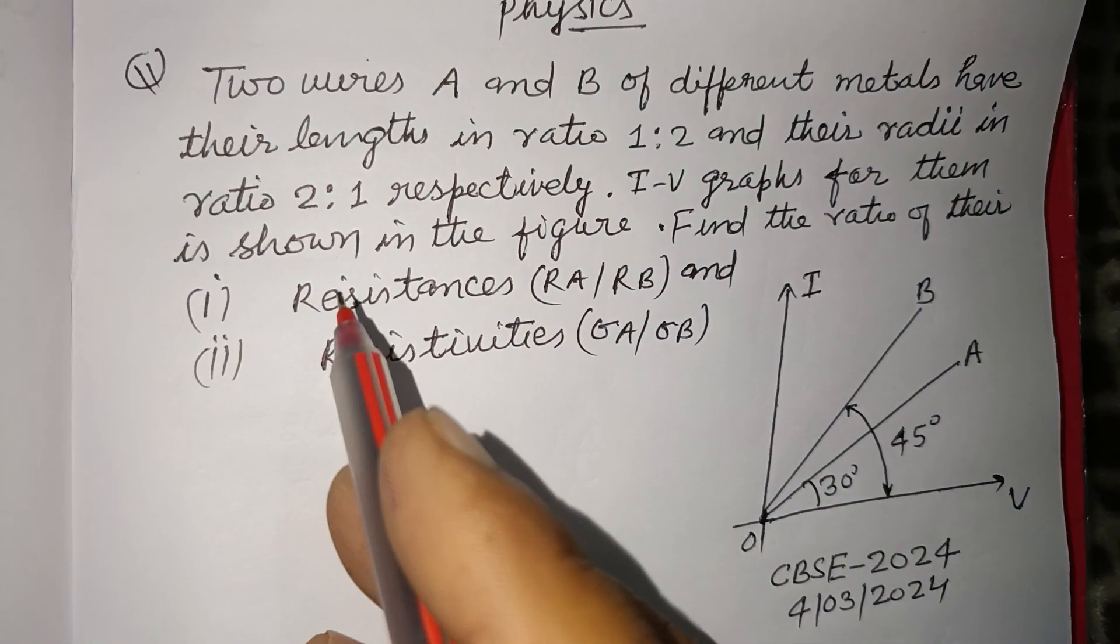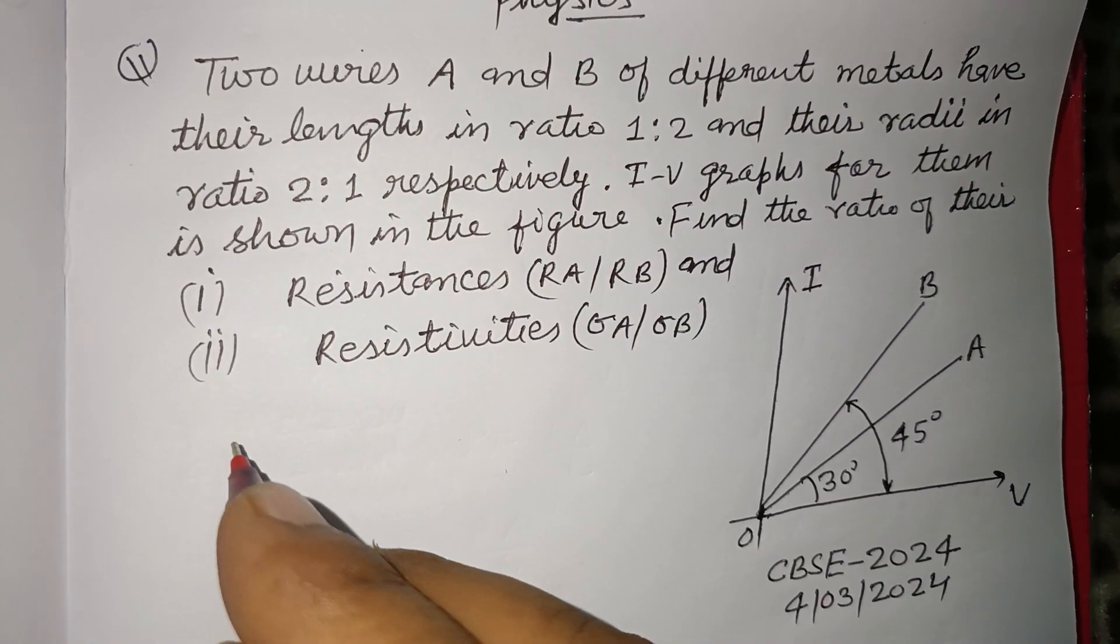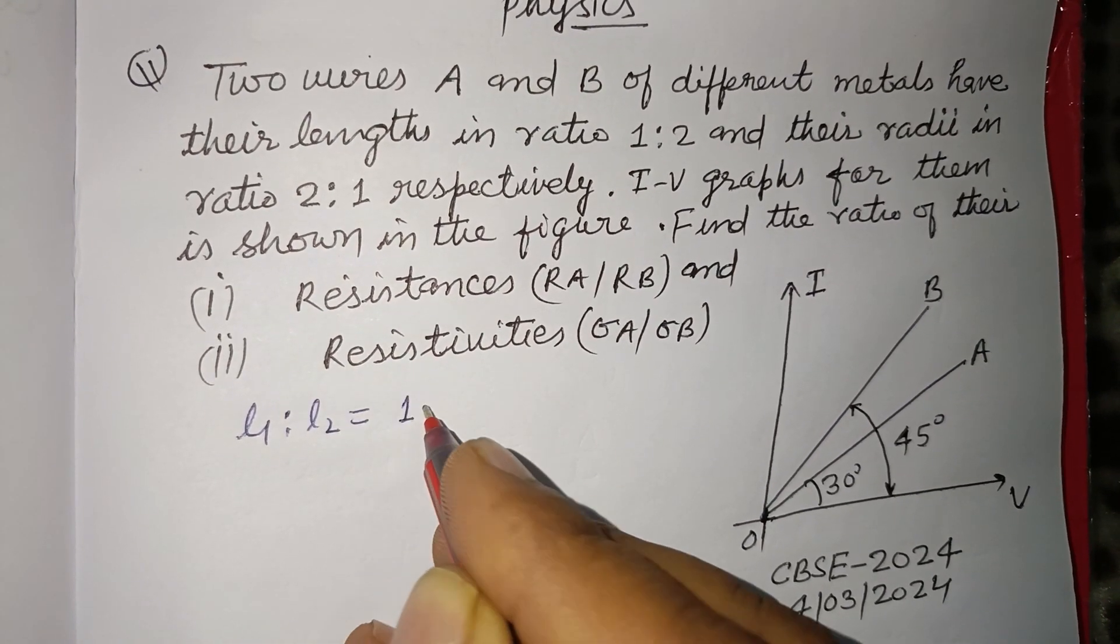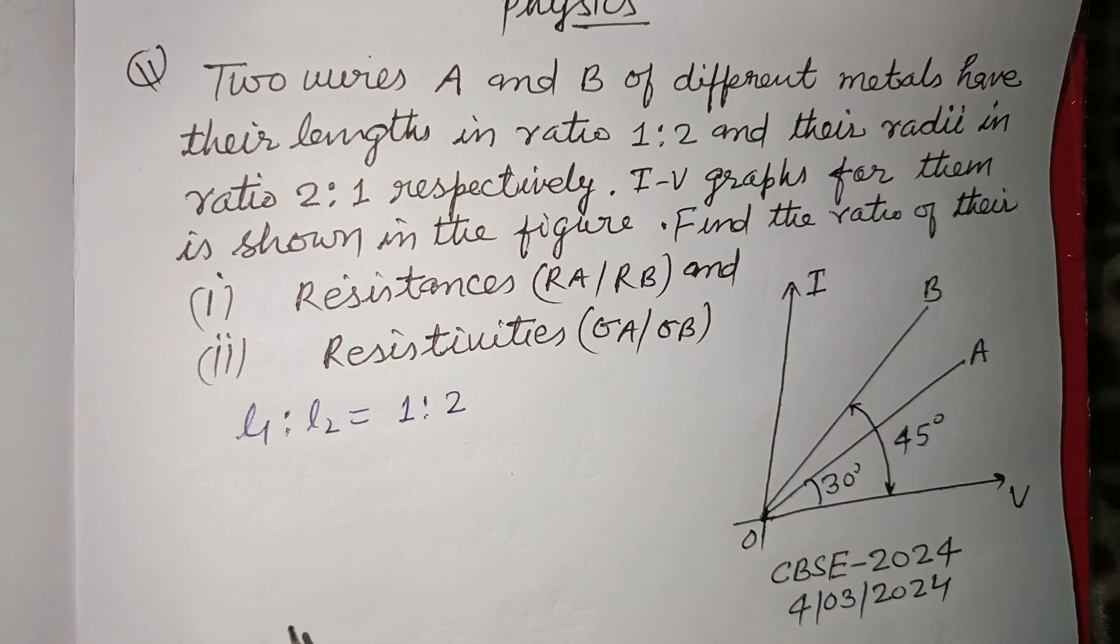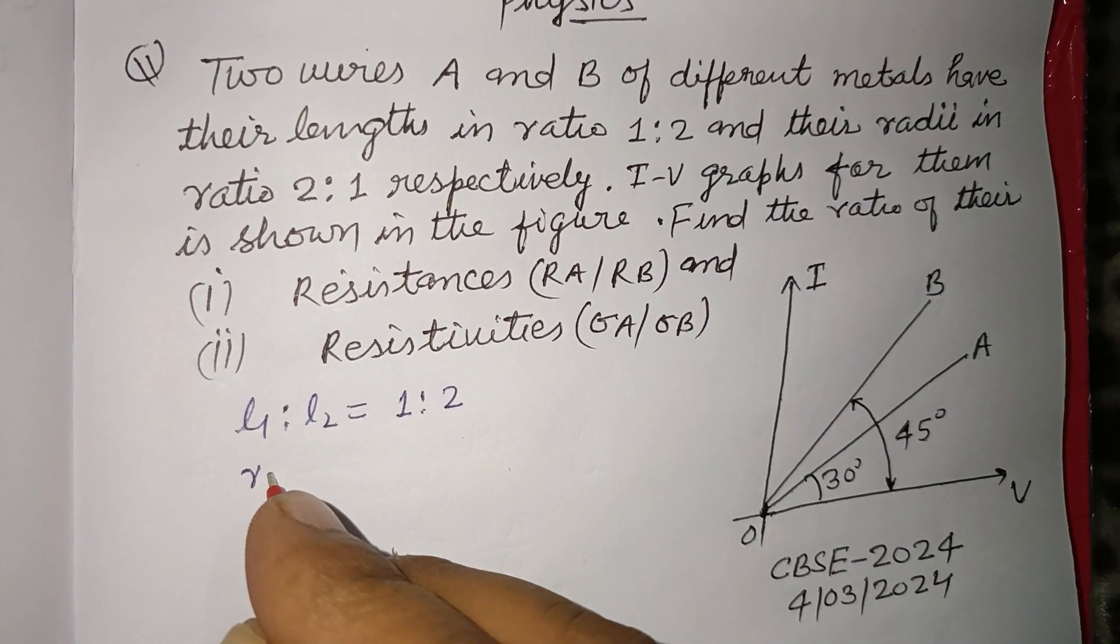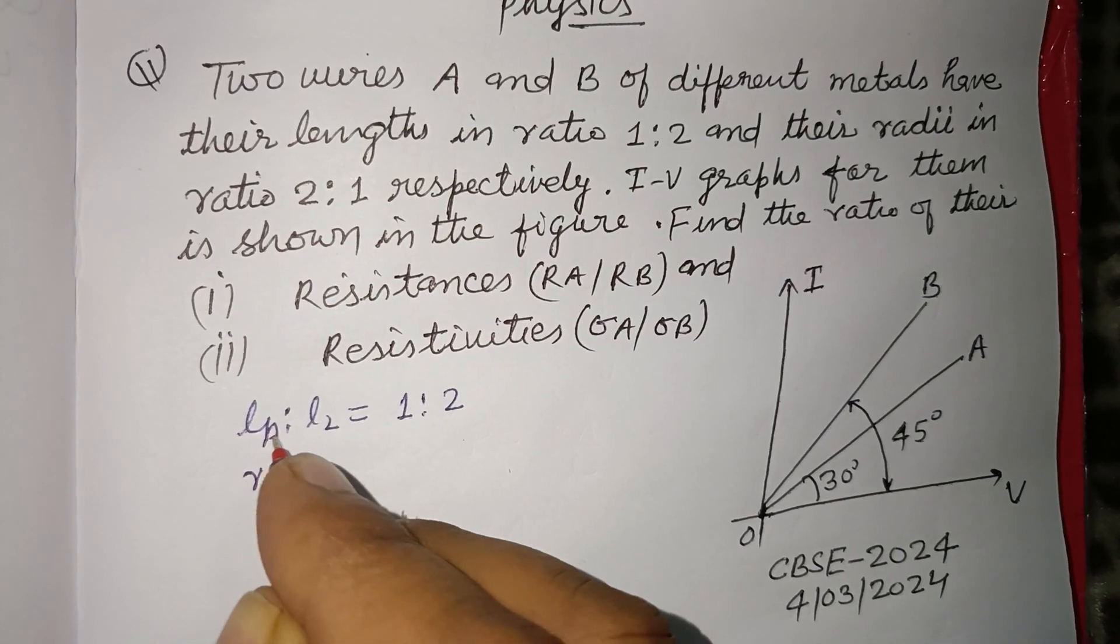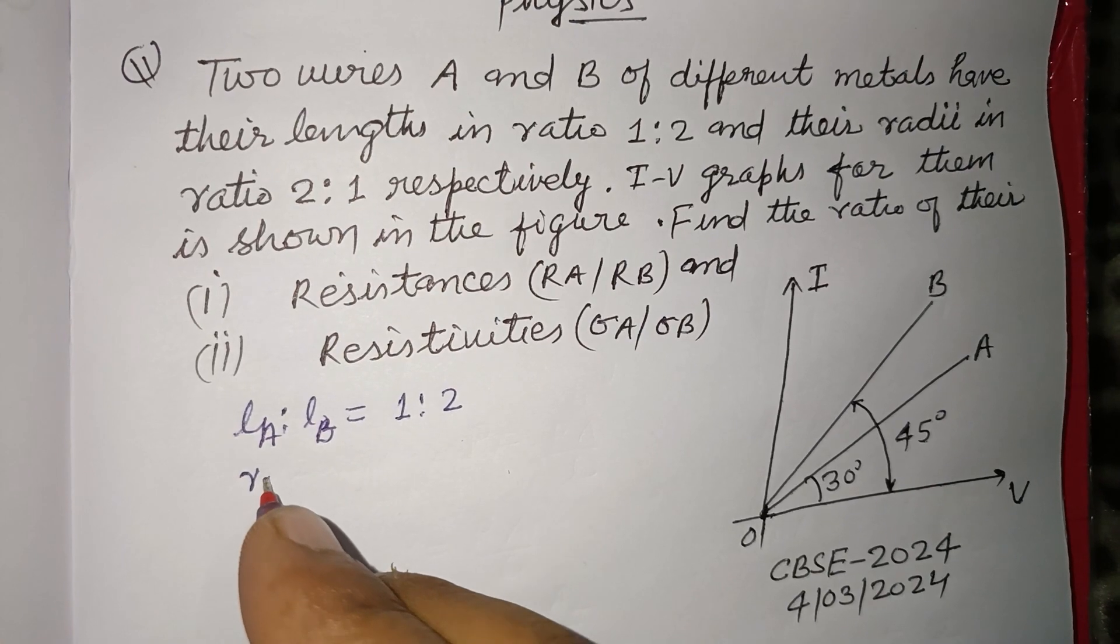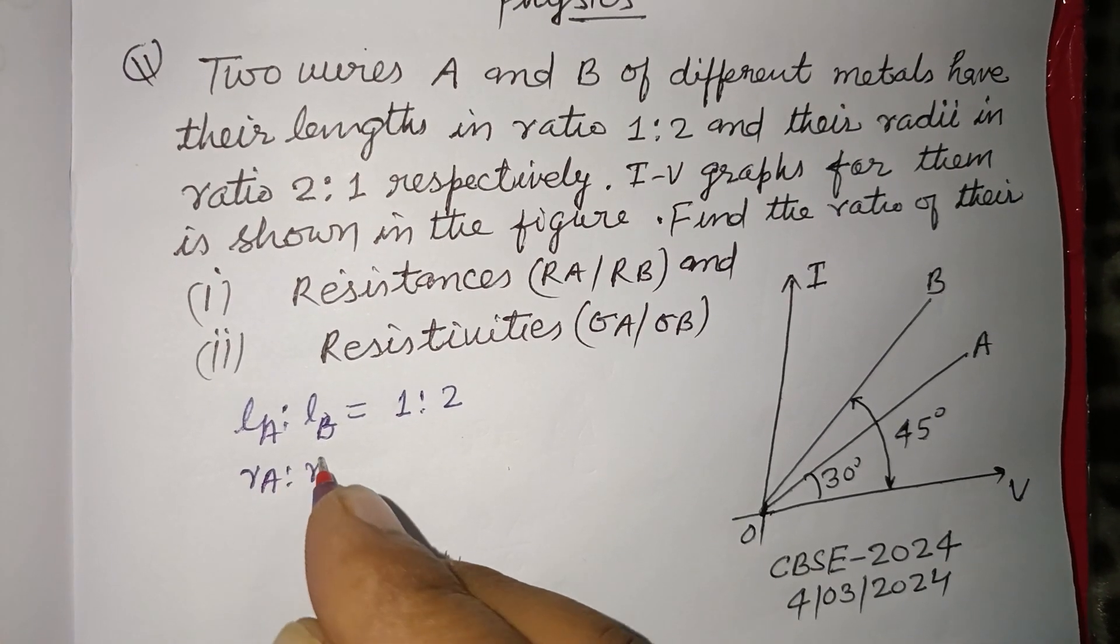The length ratio LA:LB is 1:2, and their radii are in the ratio RA:RB which is 2:1.